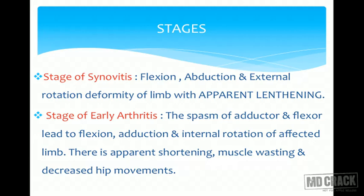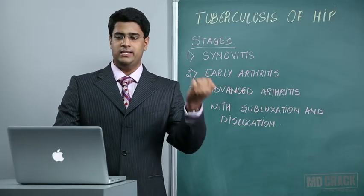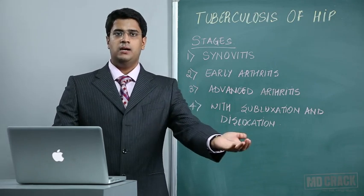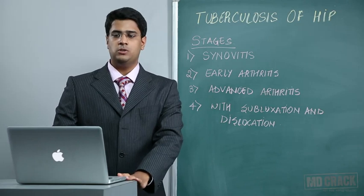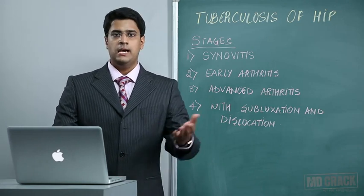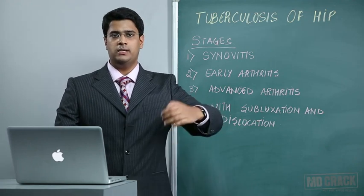In the stage of synovitis, the clinical picture is flexion, abduction, and external rotation deformity due to synovial hypertrophy and synovitis. The whole limb looks apparently lengthened, so it is also known as the stage of apparent lengthening. In the second stage — stage of early arthritis — spasm of the adductor and flexor muscles leads to flexion, adduction, and internal rotation of the affected limb, causing apparent shortening, wasting of muscles, and decreased hip movements.